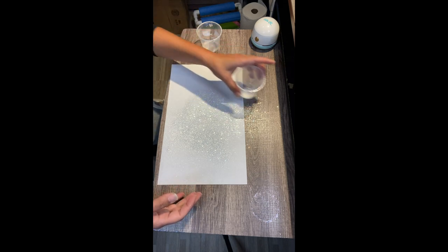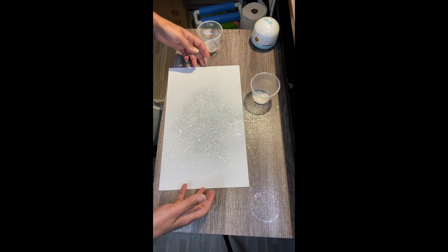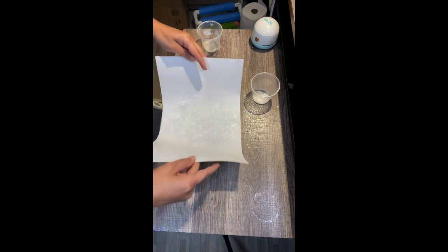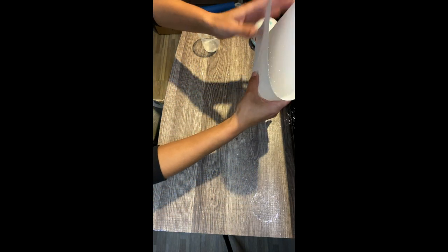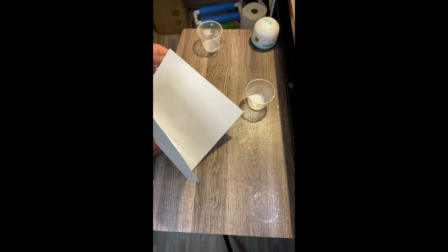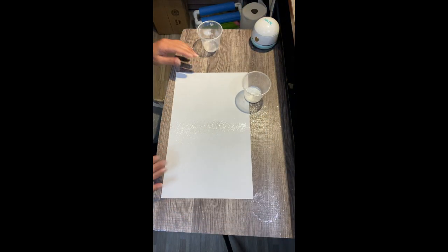Now the whole point of this is that you want to save your favorite glitter or any glitter that you have. You know, glitter is expensive. So let's just say that you are mod podging one of your tumblers and you're adding glitter to it.